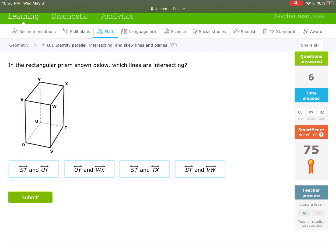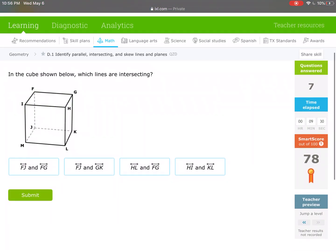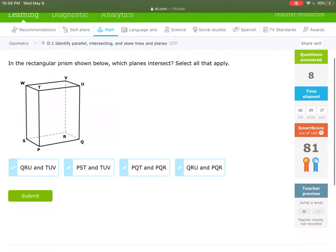Everybody, I can't jump a level, so I am going to leave it here. Actually, you know what, let me go through these real quick just to make sure there's not going to be a pop-up question that I haven't talked about. Which lines are intersecting? ST-UY, no. UY-WX, no. ST-TX, yes. ST-VW, no. It looks like they're going to keep on repeating the same types of questions to make sure that you get it down.